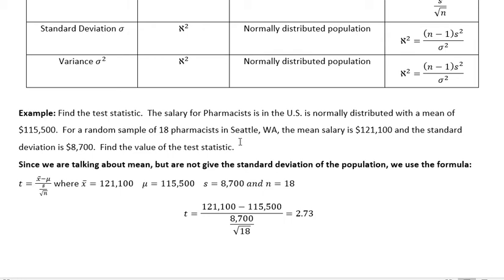Since we're talking about mean, the average, we're talking about using the formulas that require mean, but we're not given the population standard deviation. So we're talking about a t distribution. So we have this formula from above where x bar is the sample mean, 115,500 is the population mean, s is the sample standard deviation, and n is the number of our sample size.